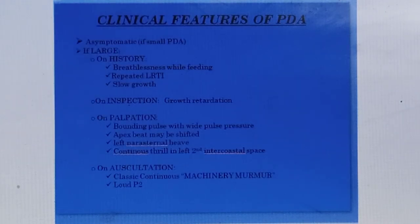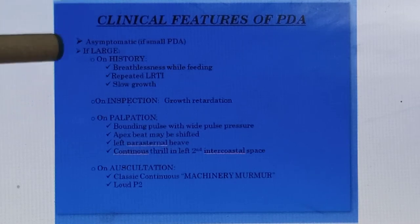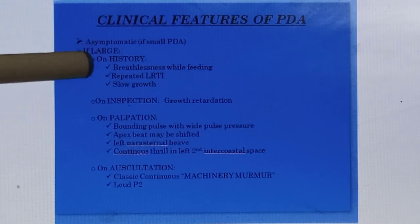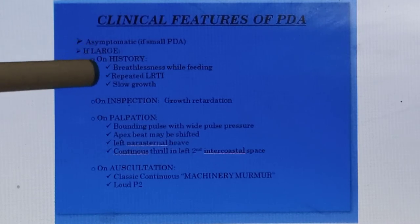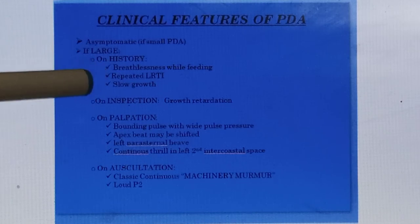The clinical features of PDA: it is asymptomatic if the defect is very small. If the defect is large, on history there is breathlessness while feeding — the patient develops shortness of breath while feeding because of pulmonary congestion and pulmonary hypertension — and there are repeated attacks of respiratory tract infections. These respiratory tract infections are also due to pulmonary congestion, and there is slow growth.